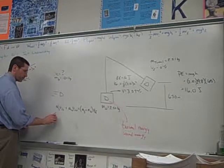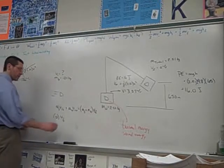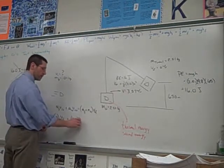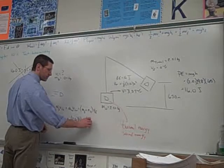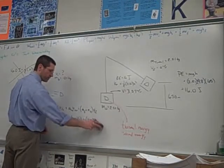So, we have 0.01 times velocity of the bullet, which we want to know, plus 2.50, and the block was just hanging there, so it had no momentum. And then, the sum of the two masses and VF we found was 3.57.